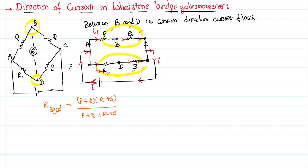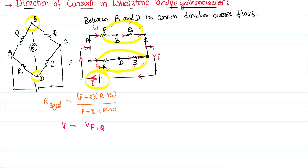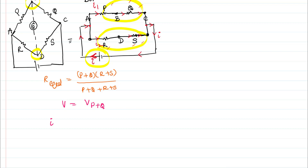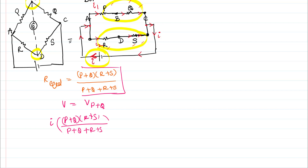Since the upper part and lower part are in parallel, the voltages are the same. The total voltage V equals the voltage across the upper part P plus Q. The formula for total voltage is: total I multiplied by total resistance, which is (P+Q)(R+S) divided by (P+Q+R+S). Voltage across P plus Q equals I₁ times (P+Q). So P plus Q cancels, giving a formula for I₁: I₁ equals I times (R+S) divided by (P+Q+R+S).